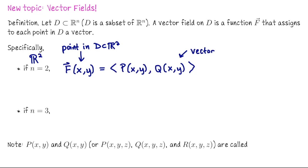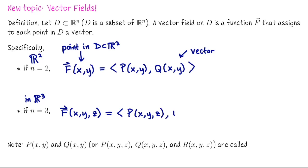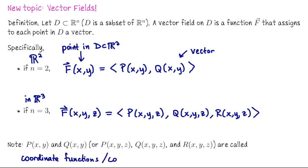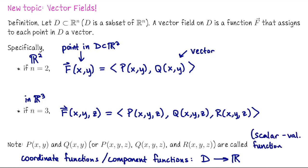Similarly, if we're working in three-dimensional space, our vector field would look like f(x,y,z) giving us a three-dimensional vector whose component functions are p(x,y,z), q(x,y,z), and r(x,y,z). Just like with previous vector-valued functions, we can think of p, q, and r as component functions, each associating a coordinate to each point in the domain. Each component function is a scalar-valued function of multiple variables.